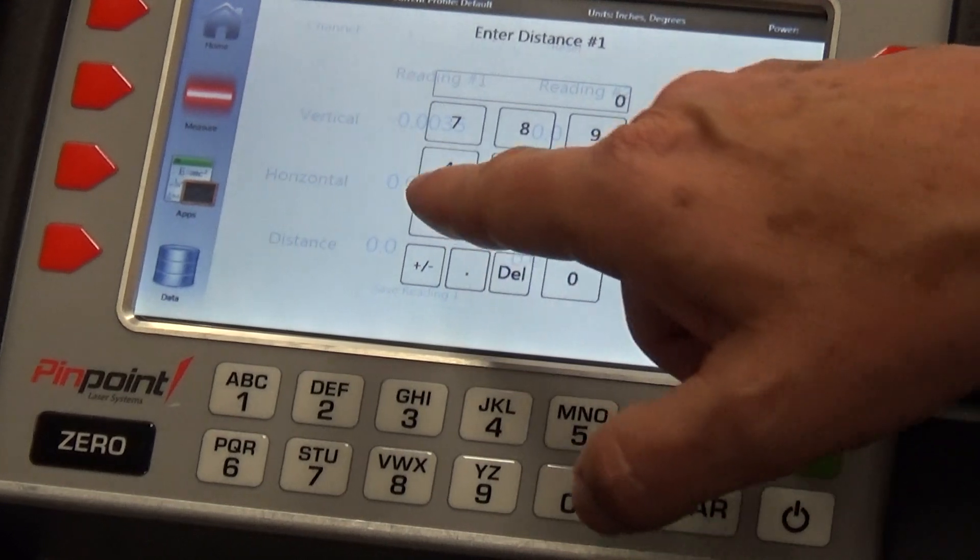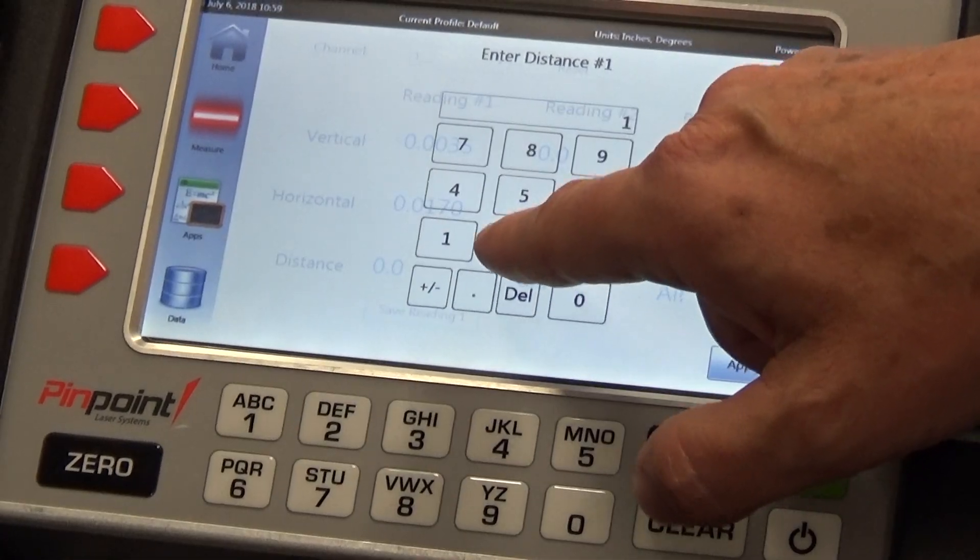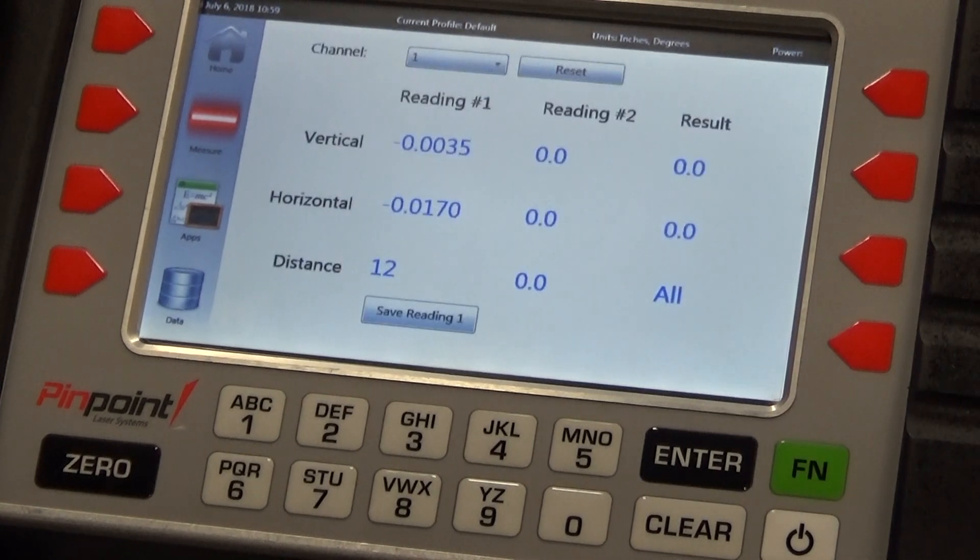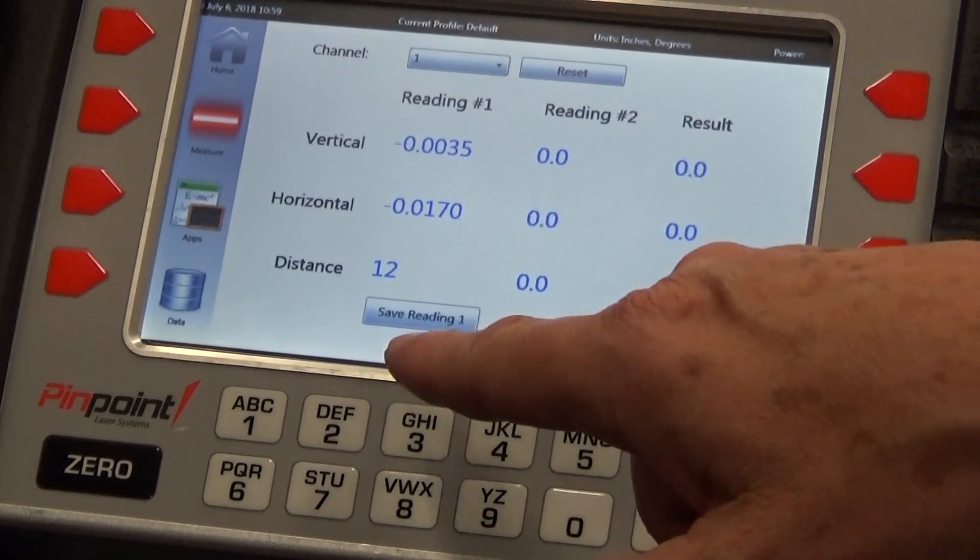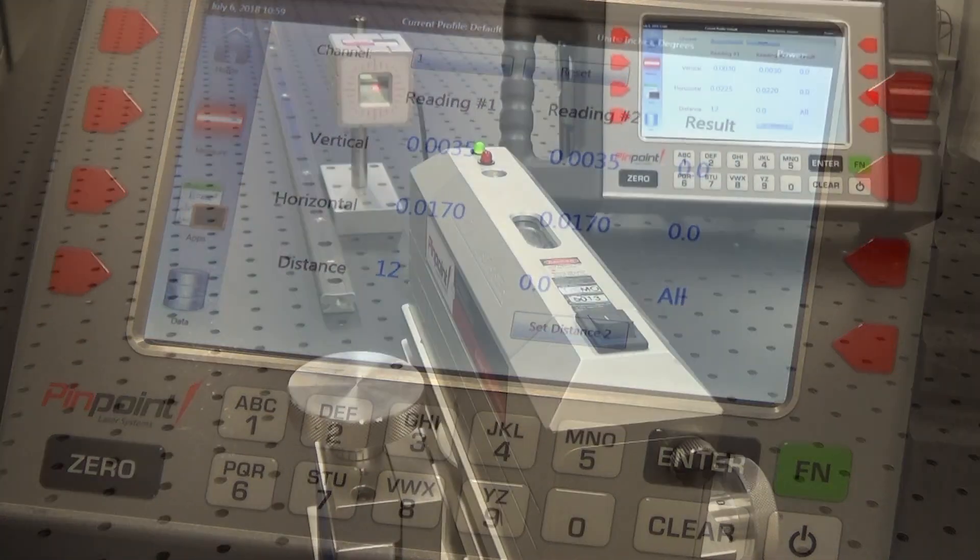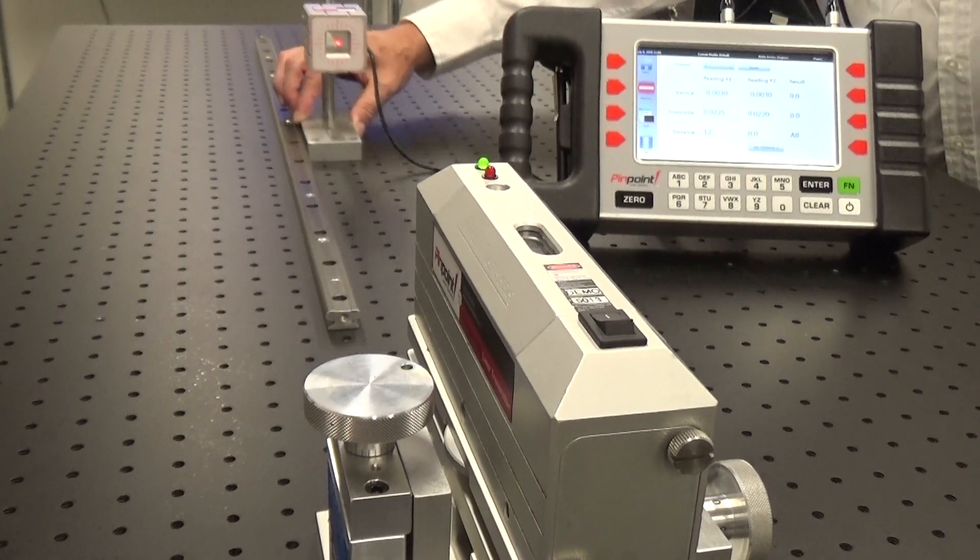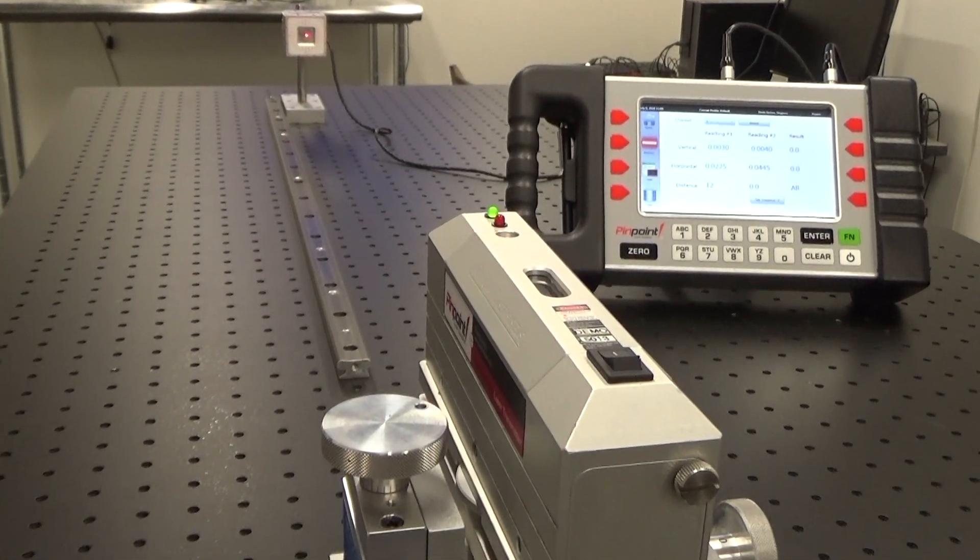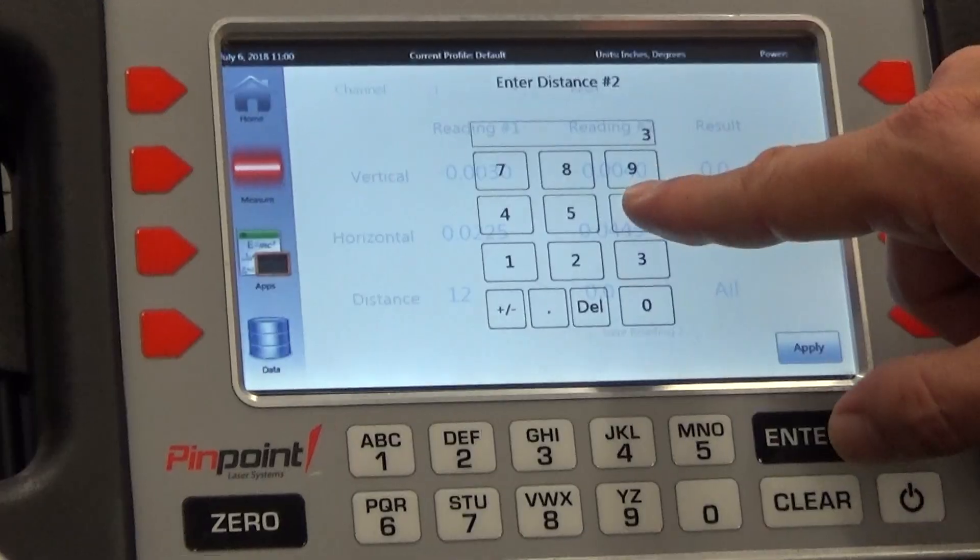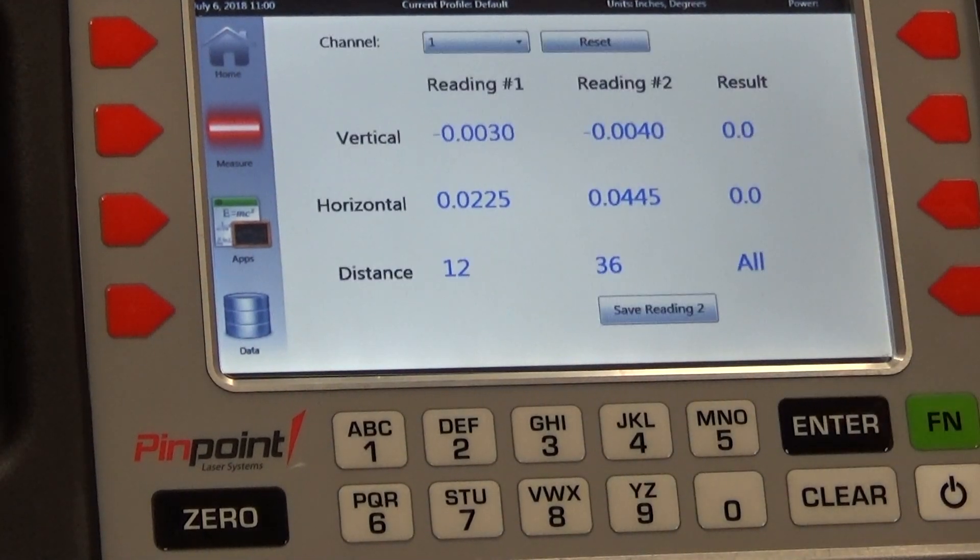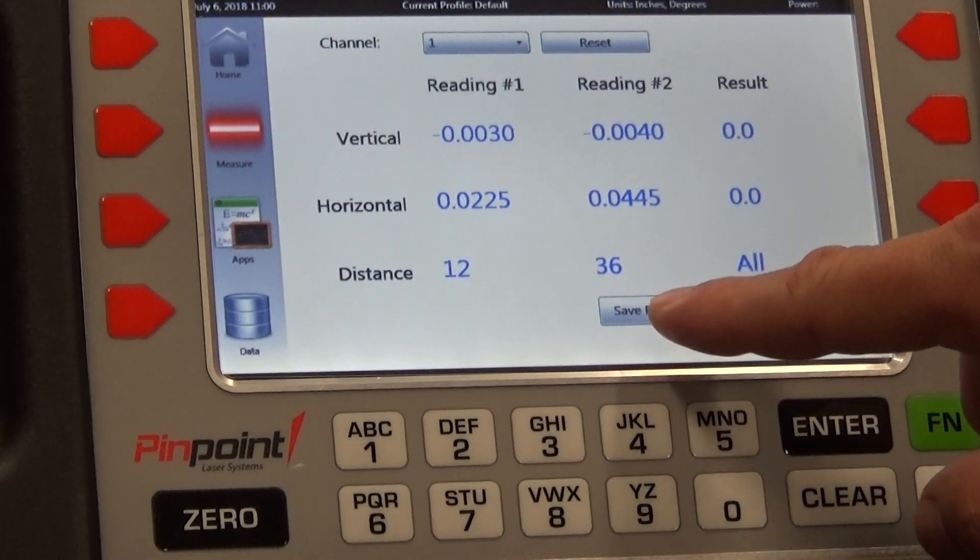Here we will set distance one and apply. Now save reading one. We will move the receiver. And now we will set distance two at 36 inches and apply. And save the reading.